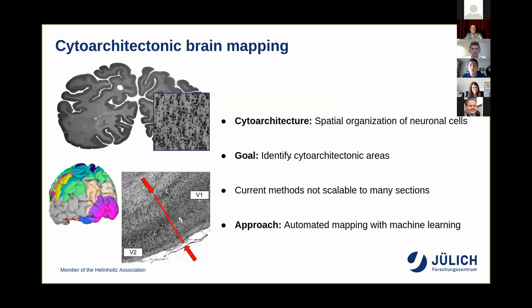I'm sure a lot of you will be familiar with cytoarchitecture or cytoarchitectonic brain mapping, but to have a common foundation I'll start with a short introduction. By cytoarchitecture we understand the spatial organization of neuronal cells in the cortex — for example, the distribution, orientation, or presence of certain cell types. Based on cytoarchitecture we can identify so-called cytoarchitectonic areas, which are regions in the brain sharing common cytoarchitectonic properties. These are interesting because cytoarchitecture can often be an indicator for connectivity and function.